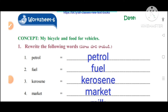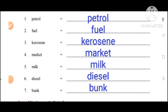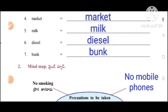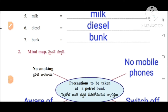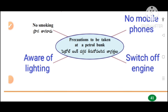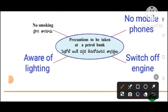Worksheet number 6, concept: my bicycle and food for vehicles. Rewrite the following words: petrol, fuel, kerosene, market, milk, diesel, bunk. Mind map — precautions to be taken at a petrol bunk: no mobile phones, switch off engine, aware of lightning, no smoking.